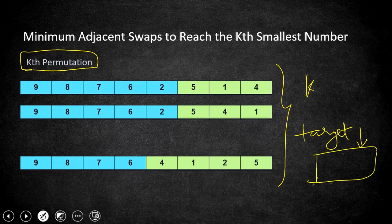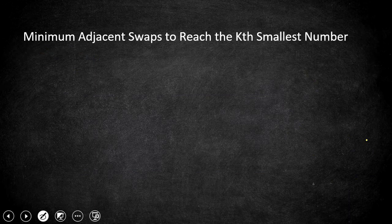Once we have this target number we compare it with the original number to find how many swaps are needed. For more detail on the coding and iterations of the next permutation logic, you can check the video linked in the description. Now moving to the second half: finding the minimum swaps required between the given input and our target.